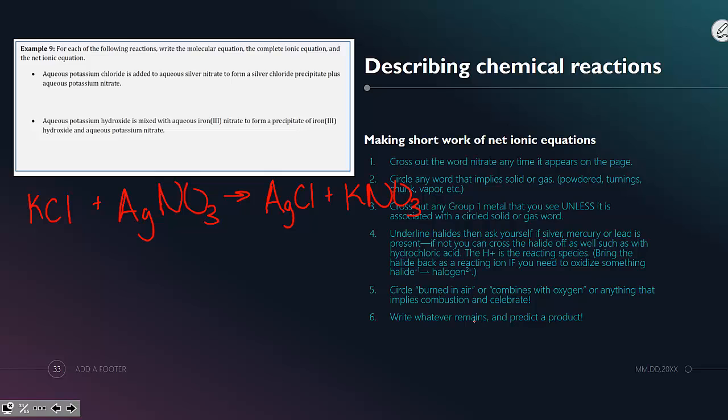First things first, you have to make sure the reaction is balanced. One potassium makes one potassium, one chloride makes one chloride, one silver makes one silver, and one nitrate makes one nitrate. This is balanced.